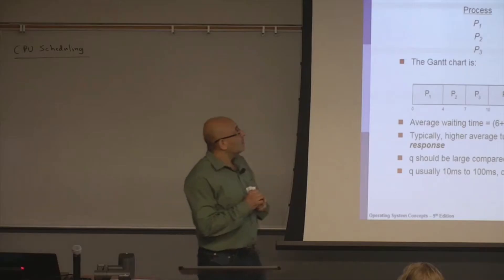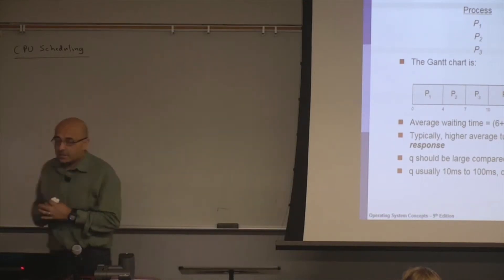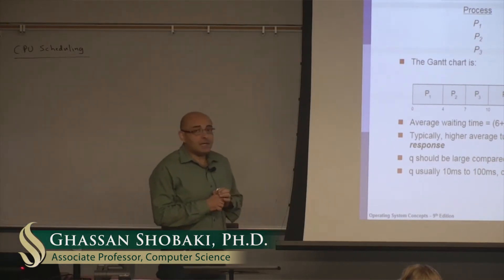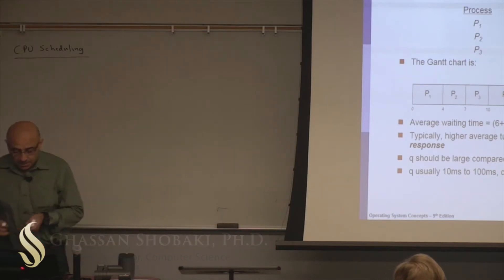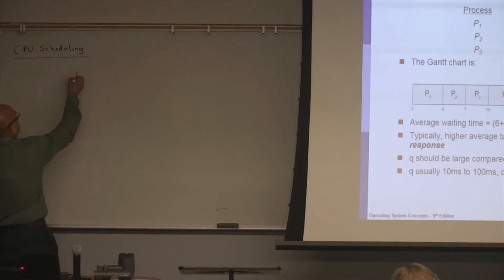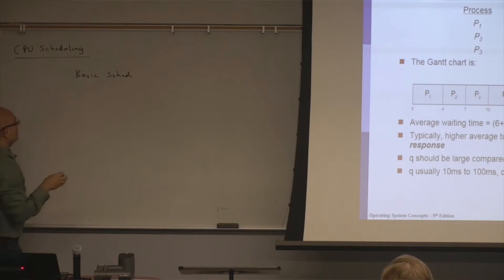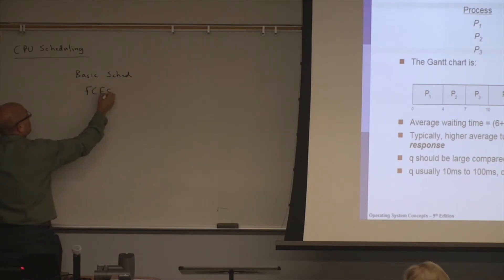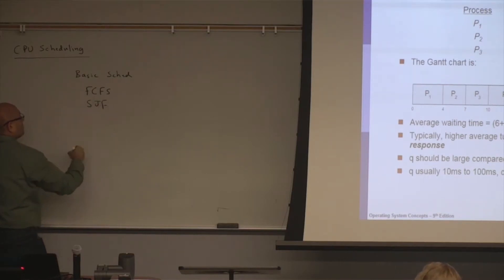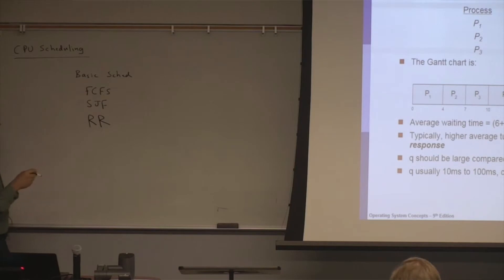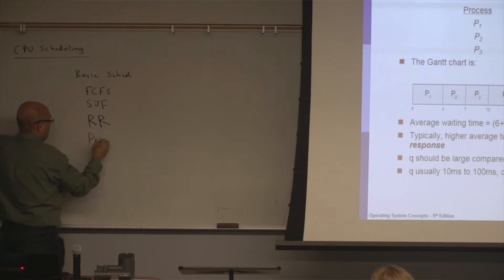Today we will continue discussing CPU scheduling algorithms. In the previous lecture, we covered some basic scheduling algorithms, including first come first serve, shortest job first, round robin, and priority. These are the basic algorithms.